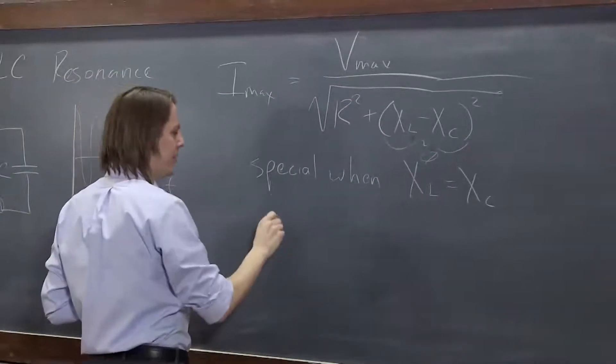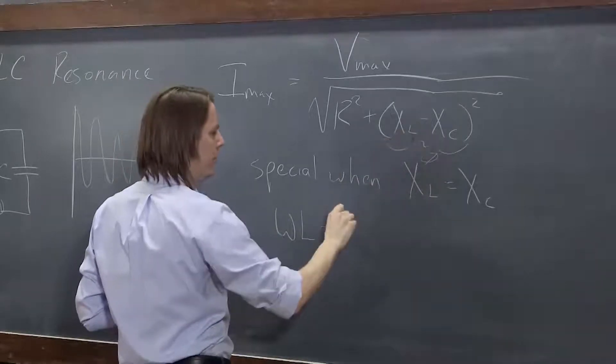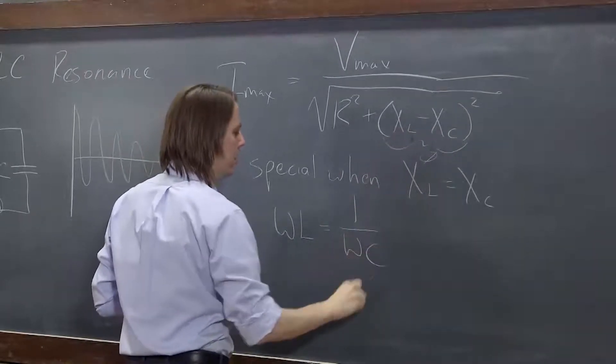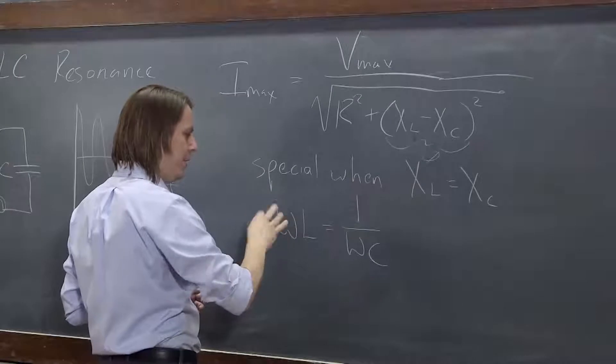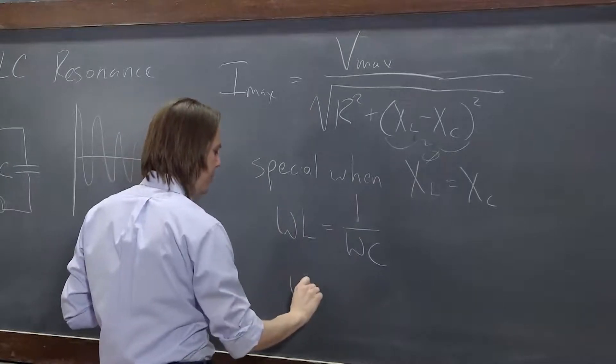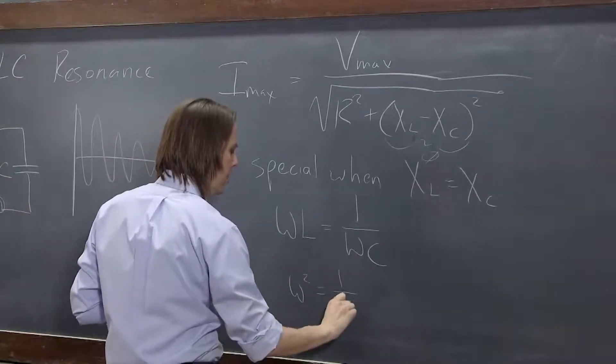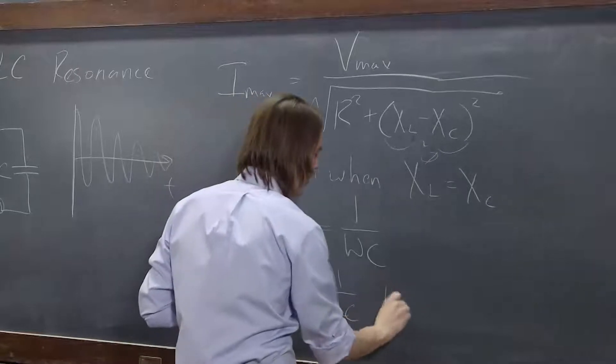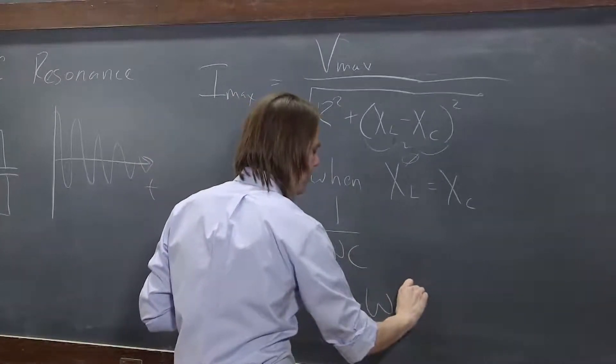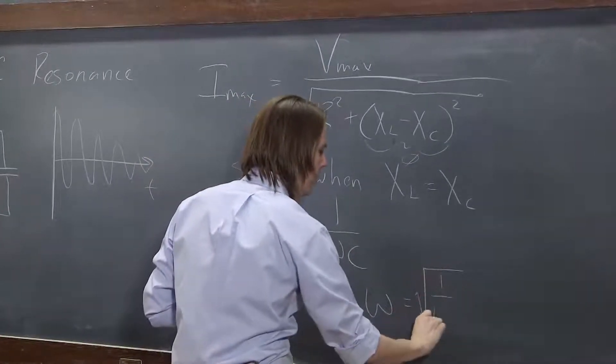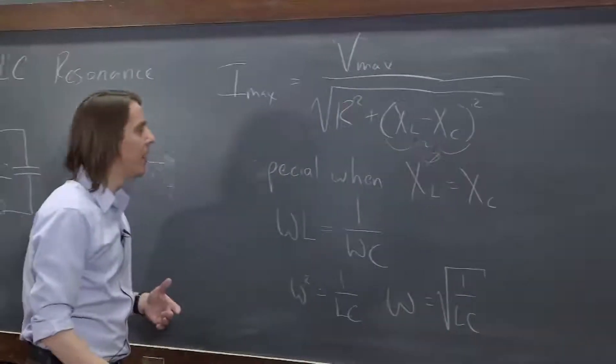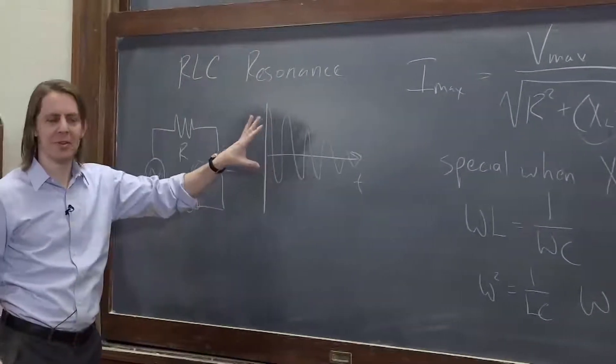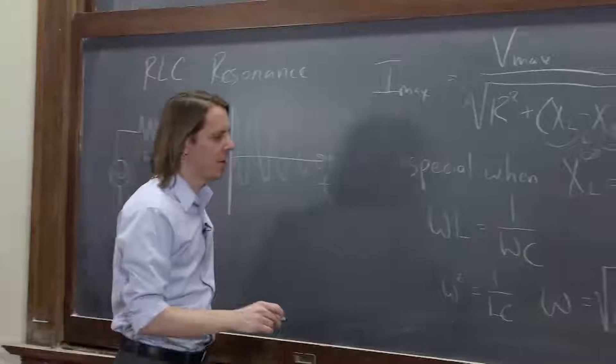Let's see what that looks like. That's when omega L equals one over omega C. So you bring that over here and that over there, and you get that happens when omega squared is one over LC, or when omega is the square root of one over LC. But you may recall that was the frequency where this happens. That's the natural frequency. We call that omega naught, usually.